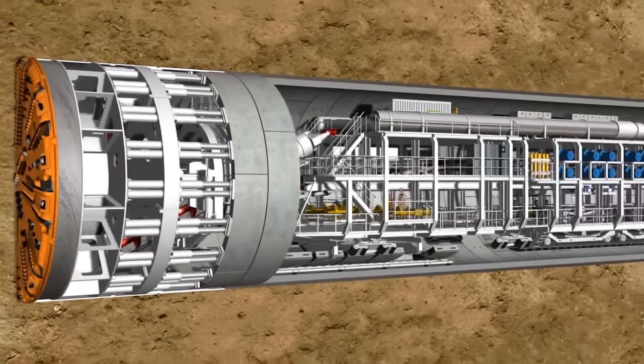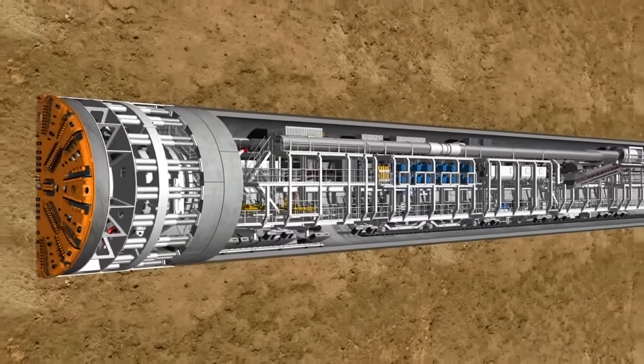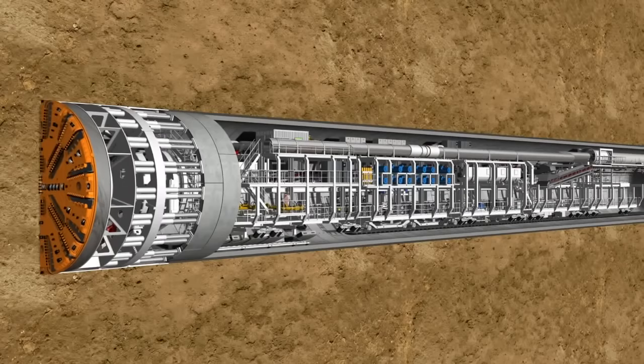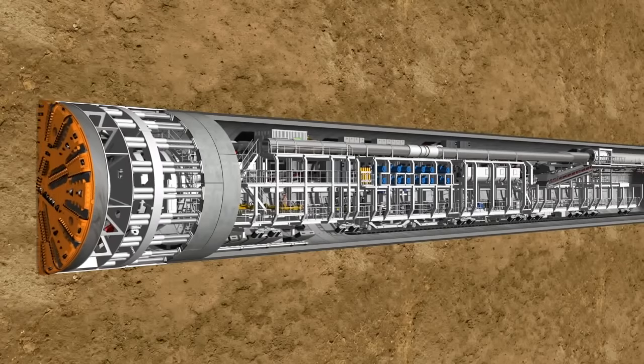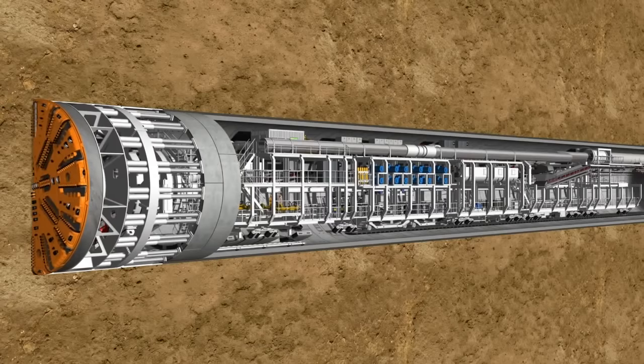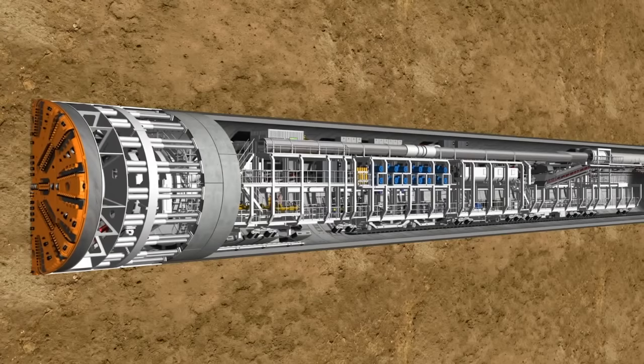The 83 meter long backup accommodates all logistic facilities necessary for the operation of the overall system. The working method of an EPB shield is basically made up of two phases: the tunneling phase and the ring building phase.